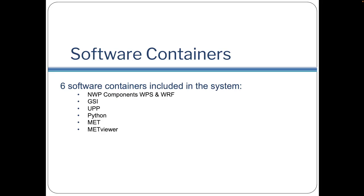There are six software containers provided in this tutorial, one for each component of the end-to-end NWP system. These include an NWP container with WPS and WARF programs, GSI for data assimilation, UPP for post-processing, Python for creating graphics, MET for verification, and METViewer for database and display of verification.